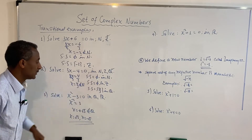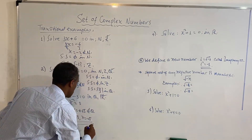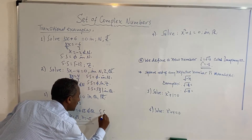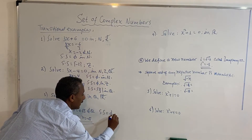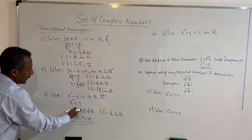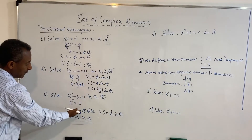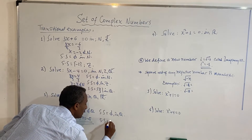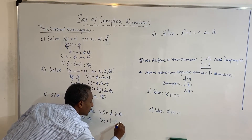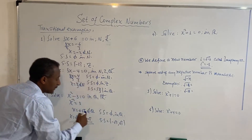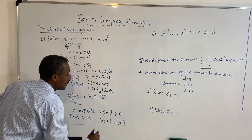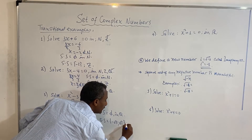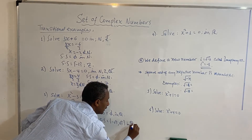The solution set is in the set of real numbers. The solution set contains negative root 3 and positive root 3. These are elements of the real numbers — specifically irrational numbers, not rational numbers. The solution set is {−√3, √3}, elements of the real numbers.